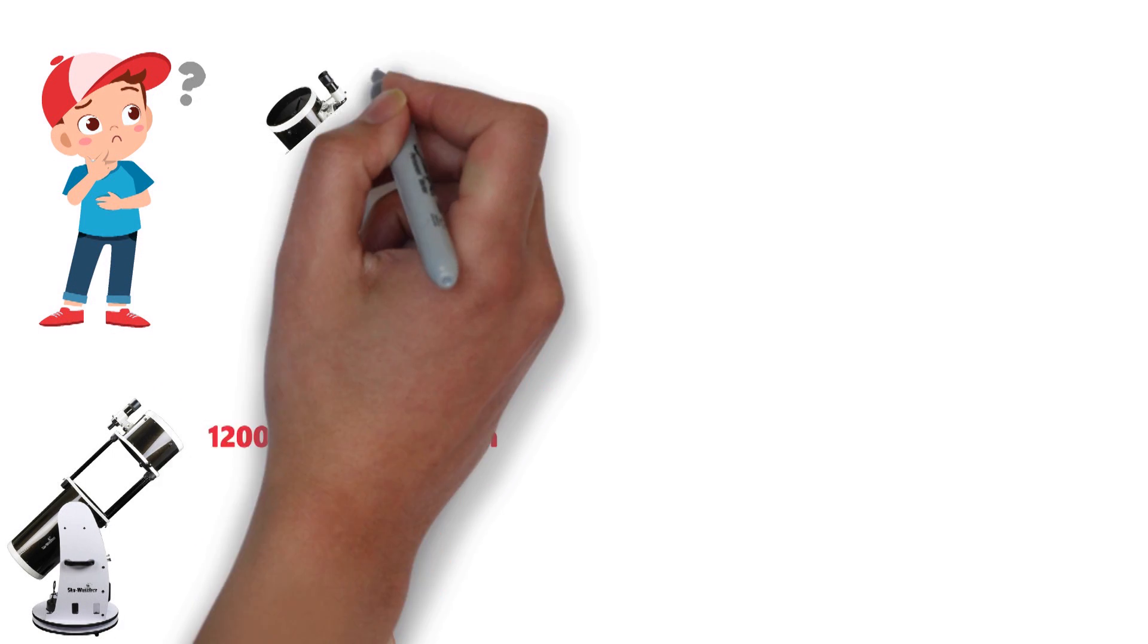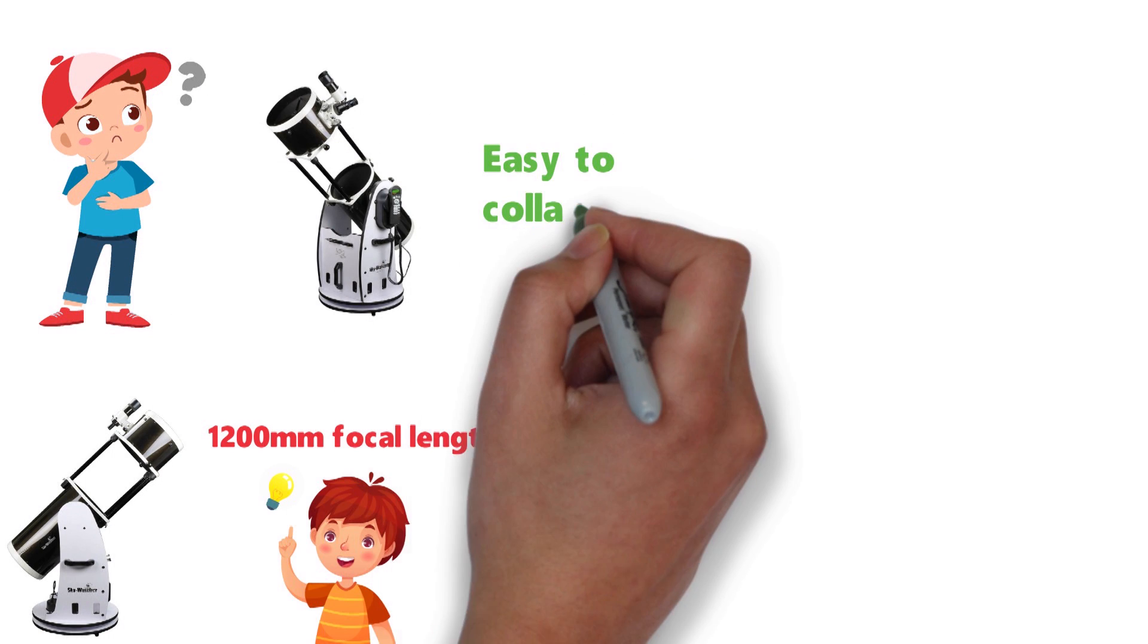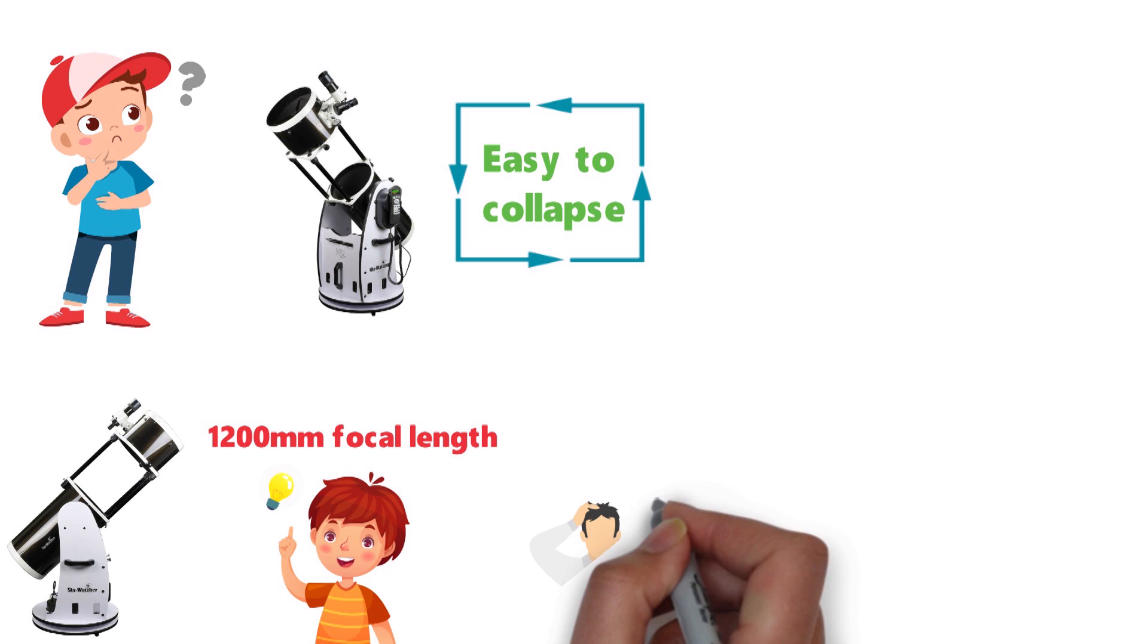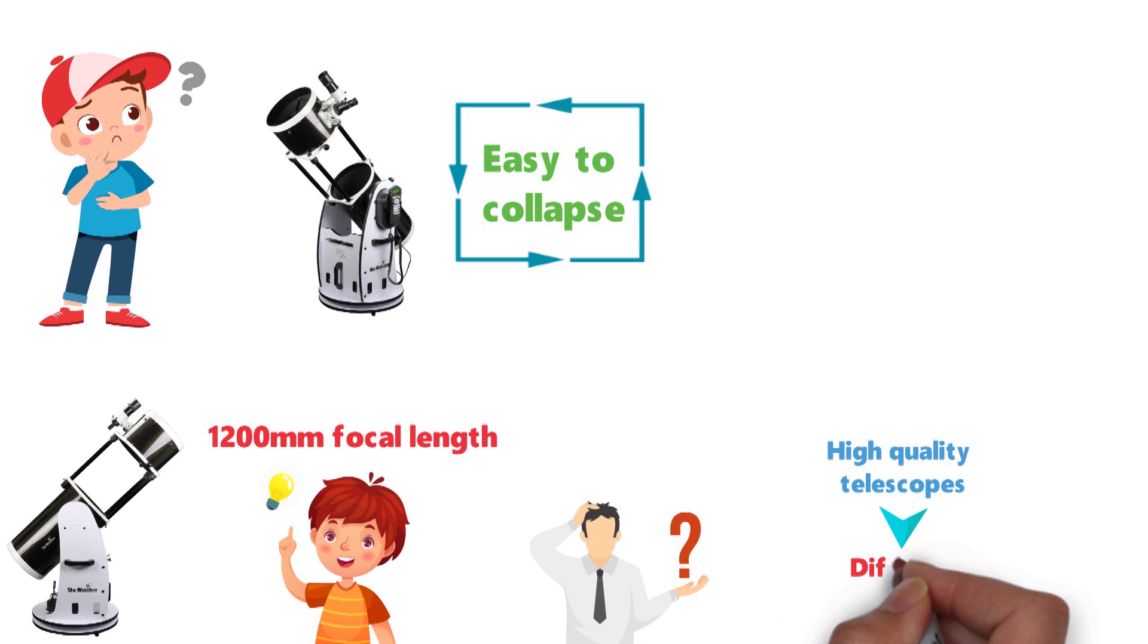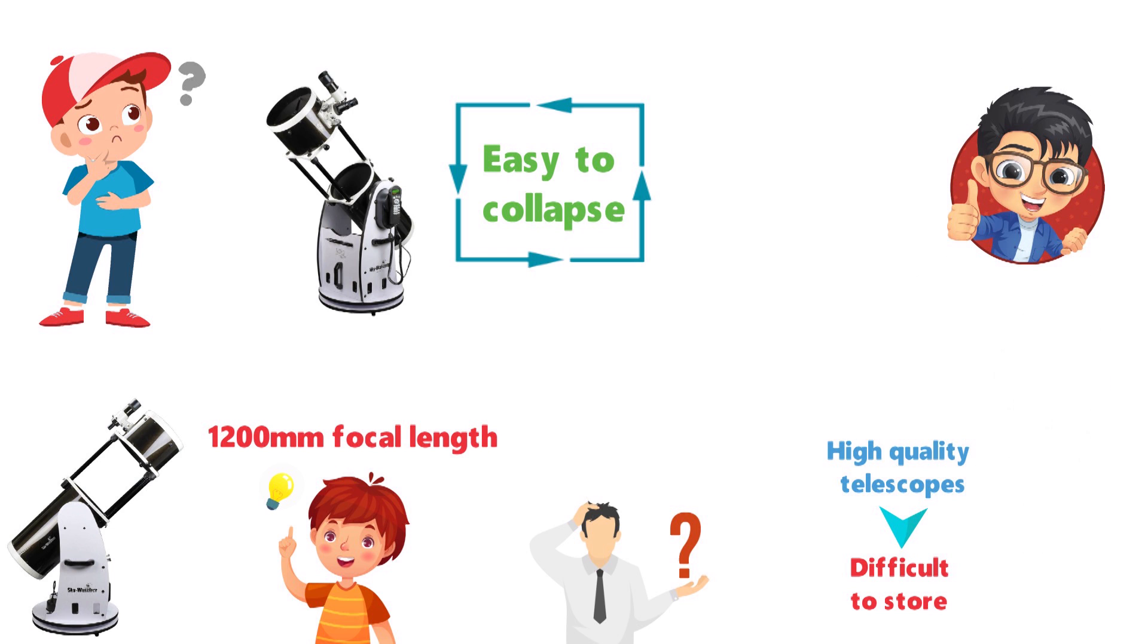What some people particularly like about the Dobsonian is that it's very easy to collapse it down and store it. One of the biggest issues people face with high-quality telescopes is that it's very difficult to store them for later. Fortunately, this isn't an issue with the Skywatcher as it's easily collapsible.